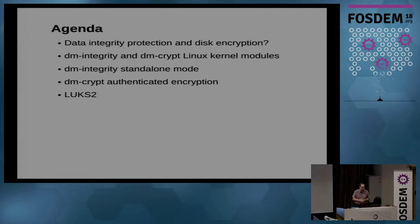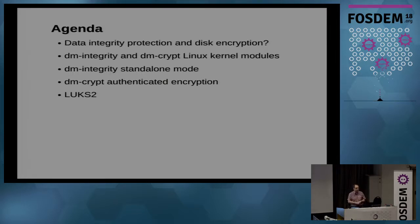The talk is just an introduction; I'll try to do it with pictures rather than mathematics or complicated formulas. I'll describe what the new device mapper integrity module is — that's already in the upstream kernel — what authenticated encryption for DM CRIB is, and we'll briefly talk about LUKS version 2. I only have two slides on LUKS since it's really about key management, but I promised it in the abstract.